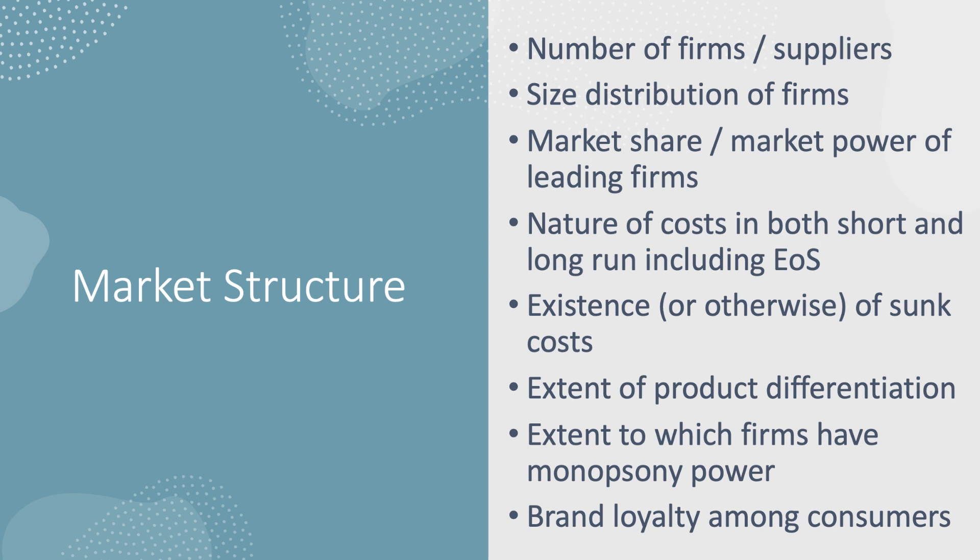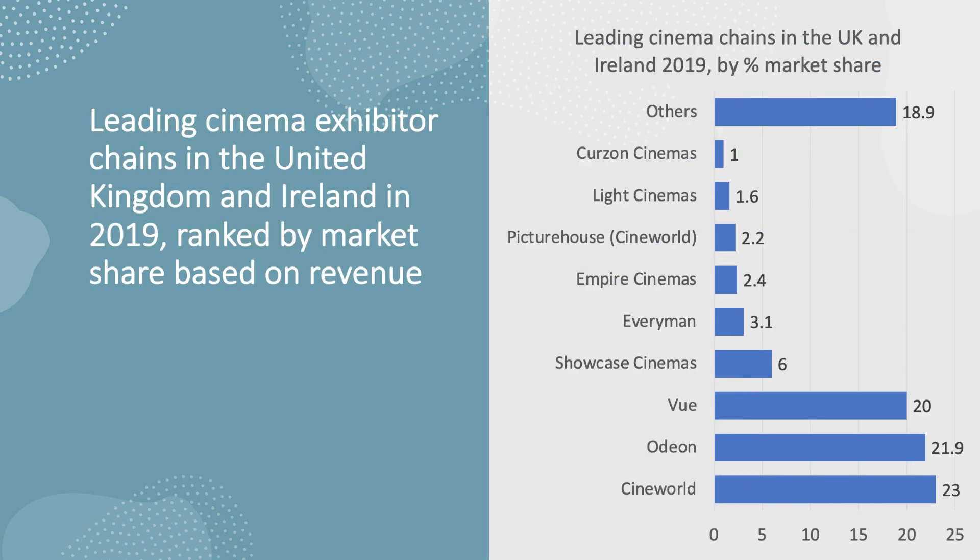Market structures are not static — they change over time. Some markets become more contestable over time, while others become more concentrated, giving dominant firms much more market share and market power. Here's a good example of the dynamic nature of markets.